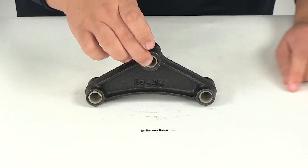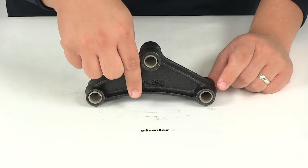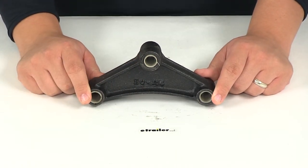So measuring from the center of this hole to the center of these holes, going at a straight line measurement, that gives us a measurement of two inches.